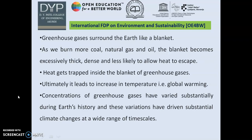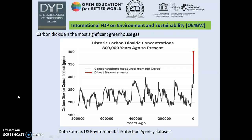Greenhouse gases surround the Earth just like a blanket. When we burn natural gases and oil, the blanket becomes more and more thick and dense, less likely to allow heat to escape. Ultimately, heat gets trapped inside the blanket of greenhouse gases, leading to an increase in temperature — this effect is known as global warming. Out of all greenhouse gases, carbon dioxide is the most significant.